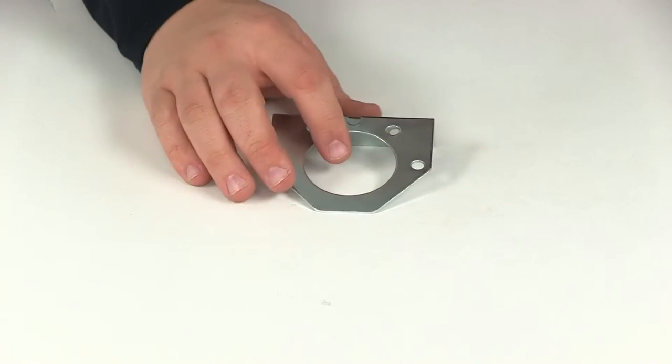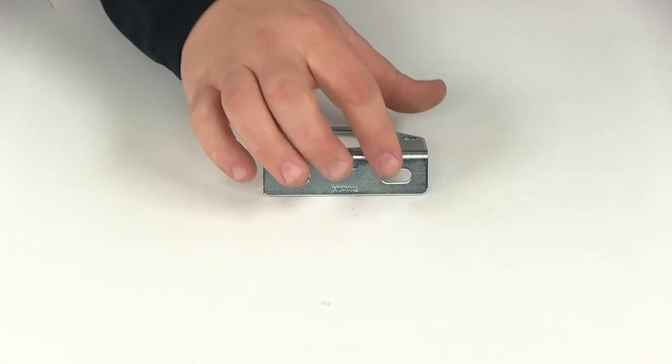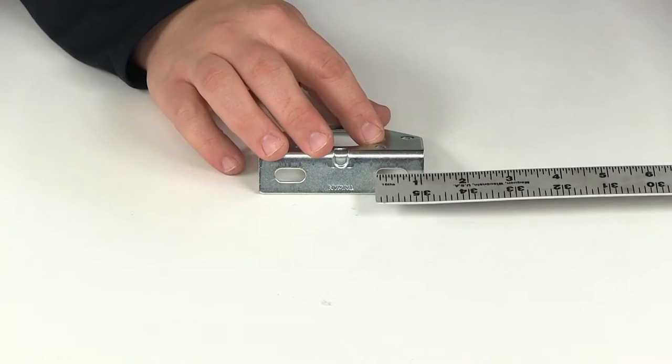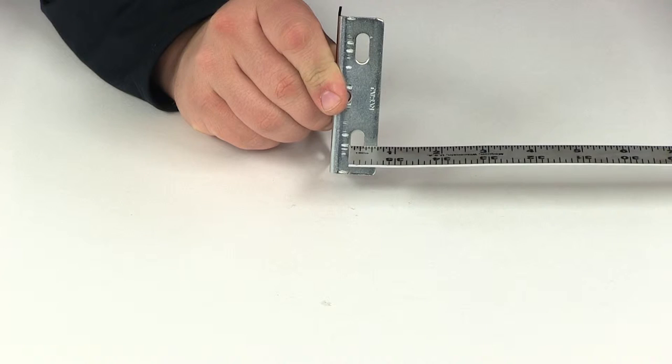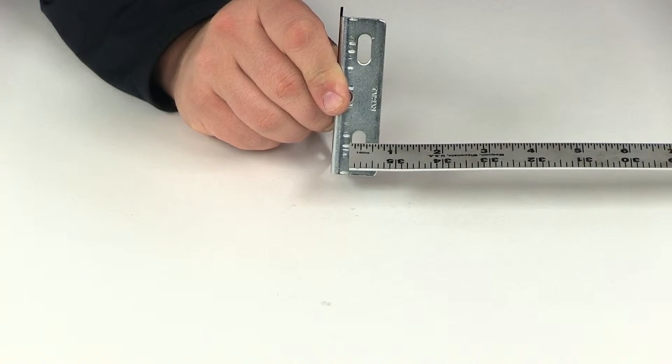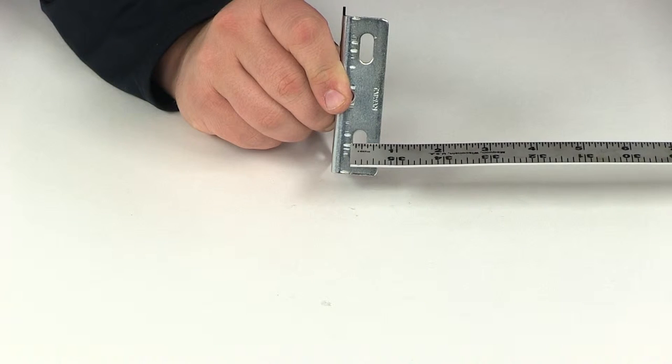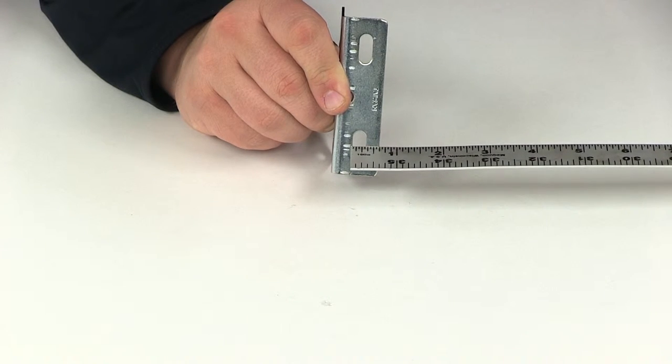The smaller holes here have a diameter of a quarter of an inch. These holes right here give us a measurement of 5 eighths of an inch by about 5 sixteenths of an inch.